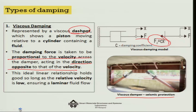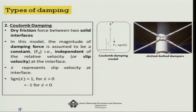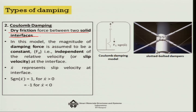The other type of damping model is Coulomb damping, which is basically dry friction force between two solid interfaces. Unlike viscous damping where the damping force is proportional to velocity, in Coulomb damping the damping force is assumed to be constant and independent of the relative velocity.